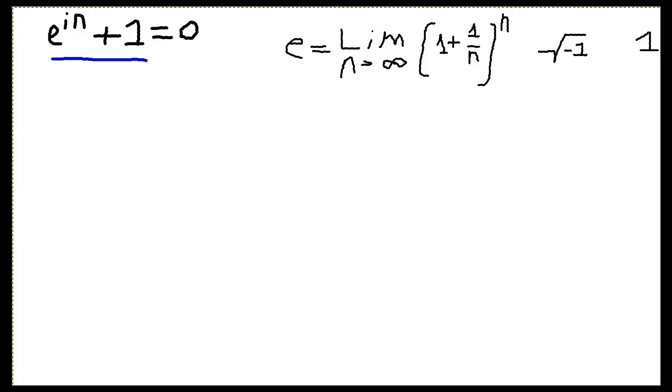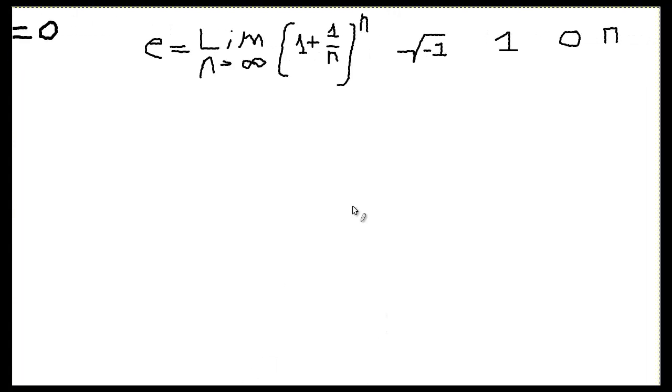So we have Euler's number, which is this expression here, the limit as n approaches infinity of 1 plus 1 over n to the n. We have the imaginary number here, which is the square root of negative 1.